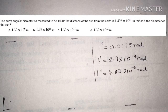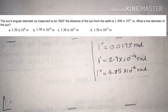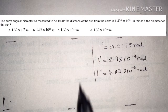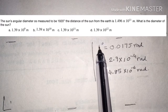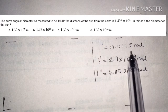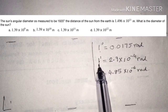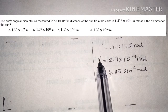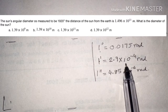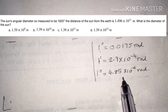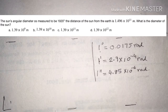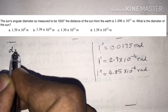The options are: option A: 1.39 into 10 power 9 meters, option B: 1.39 into 10 power 10 meters, option C: 1.39 into 10 power 11 meters, option D: 1.39 into 10 power 12 meters. Key conversion values: 1 degree equals 0.0175 radians, 1 minute equals 2.9 into 10 power minus 4 radians, and 1 second equals 4.85 into 10 power minus 6 radians.